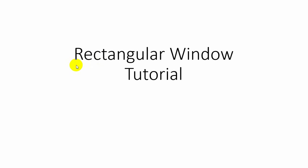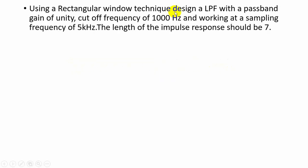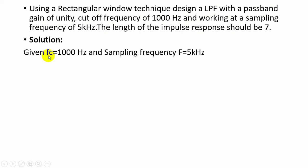Welcome. In this video we will see an example to design a FIR filter using a rectangular window. We are going to design a low pass filter using a rectangular window technique. The passband gain is unity and the cutoff frequency is 1000 Hz. This is working at a sampling frequency of 5 kHz and the length of the impulse response should be seven.